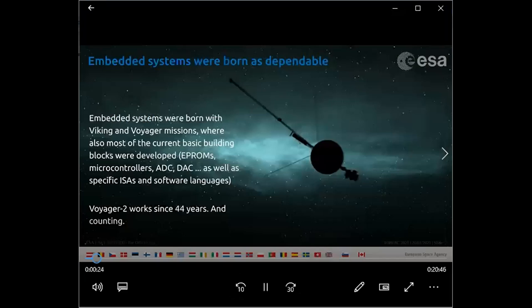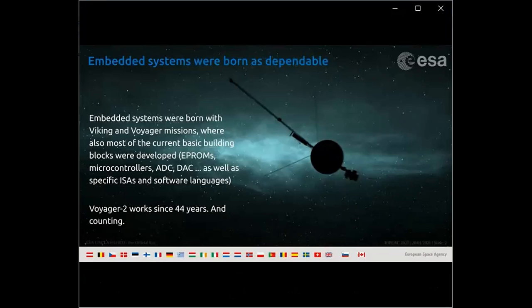Why RISC-V and why space? The systems we depend on were born to cope with the fact that we had to launch at the time of the Viking and Voyager missions, where most of the basic building blocks we discuss today were developed — things like core processors, microcontrollers, I2C, DAX, software languages. Voyager 2 has worked for 44 years and counting, reaching well beyond the limits of the known universe.